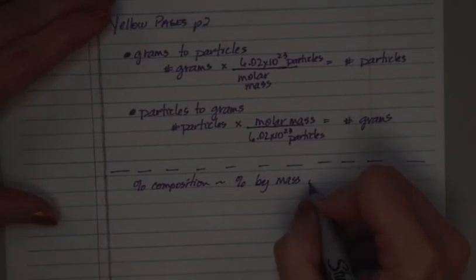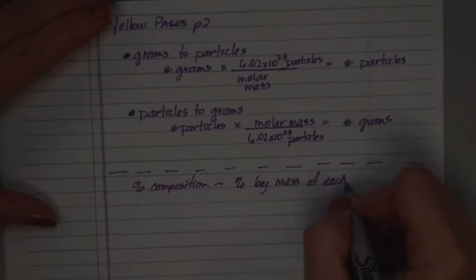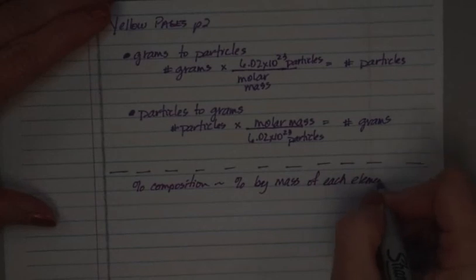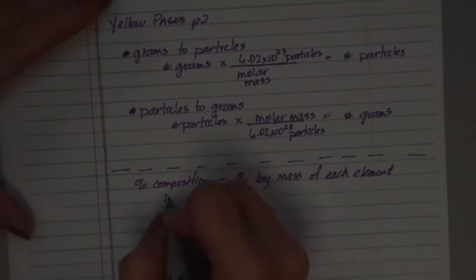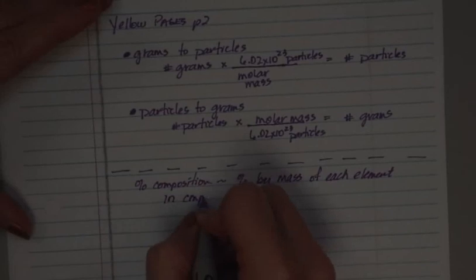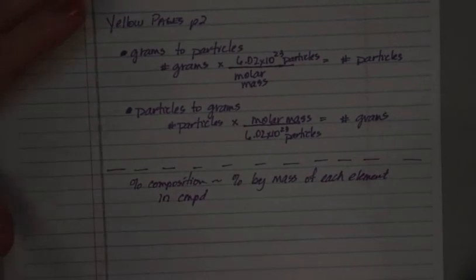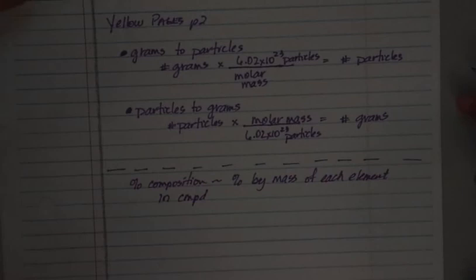Of each element in a compound. You might not have to calculate every single element. They might just ask about one in particular, but it's still going to be talking about each element in a compound. You could even do something like this. Our lab this week is you're going to find the percent sugar in gum. So what percent of the composition of the gum is sugar? So again, that's percent composition.